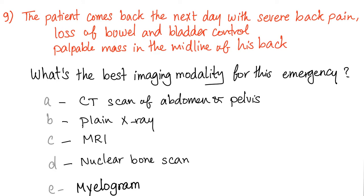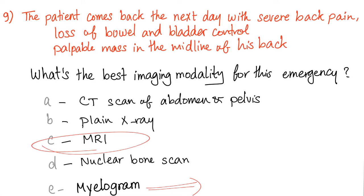What's the best imaging modality for this emergency? CT scan of abdomen and pelvis, plain x-ray, MRI, nuclear bone scan, or myelogram? The answer is MRI. Myelogram is history — you would flip the patient upside down and take an x-ray to look for fluid accumulation before an obstruction. Don't do that.